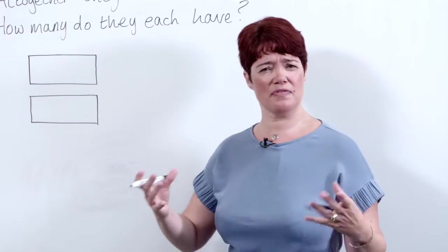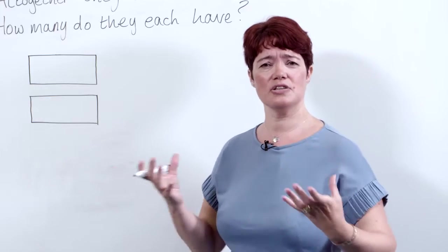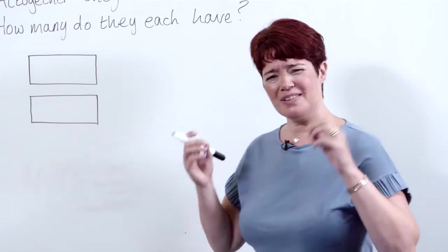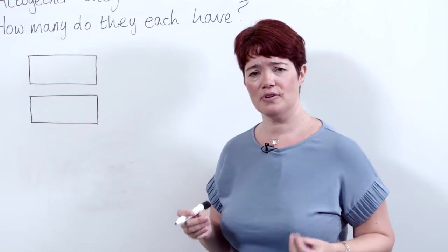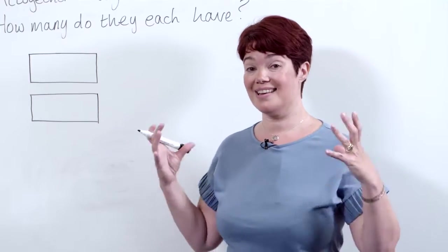This is a problem where we've generally got two things, we know the relationship between and a total altogether. Children often struggle with these to know where to start, which operation to use, so it's really useful to use the bar model so they can see it clearly.